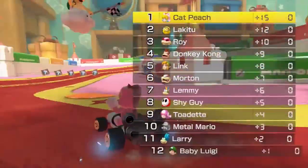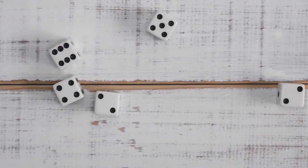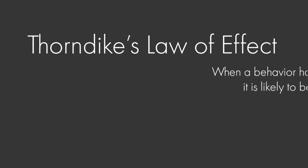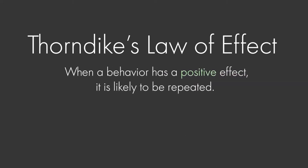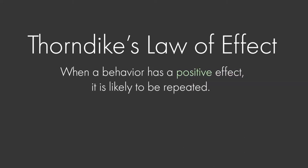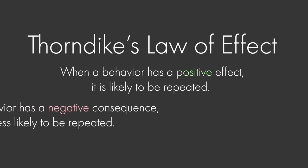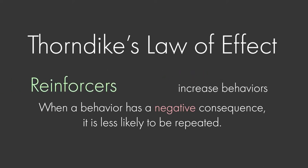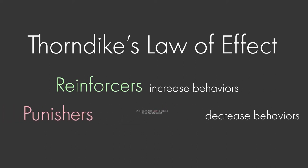Operant conditioning research studies how the effects of a behavior influence the probability it will occur again. According to Thorndike's Law of Effect, when a behavior has a positive or satisfying consequence, it's likely to be repeated. However, when a behavior has a negative — painful or annoying — consequence, it's less likely to be repeated in the future. Effects that increase behaviors are referred to as reinforcers, and effects that decrease them are referred to as punishers.